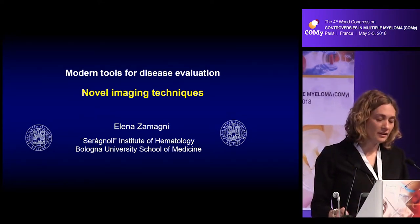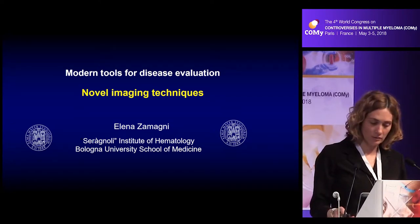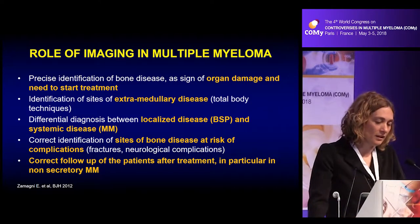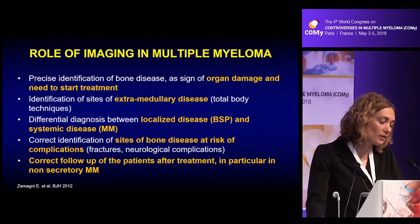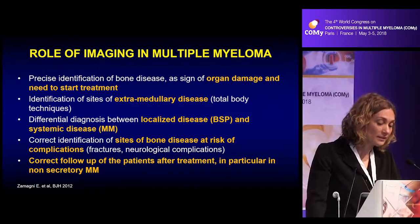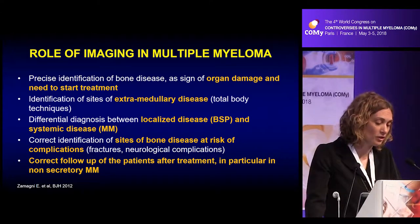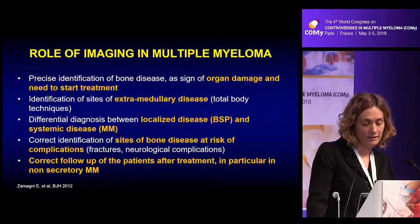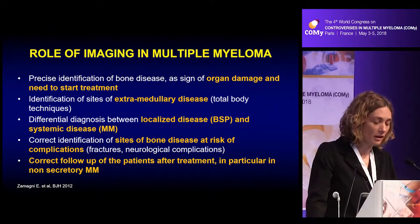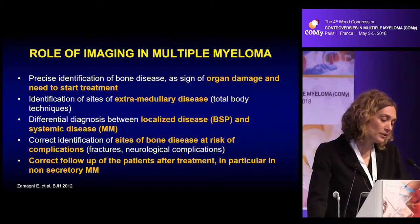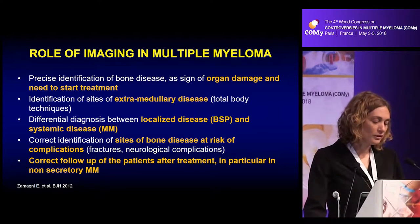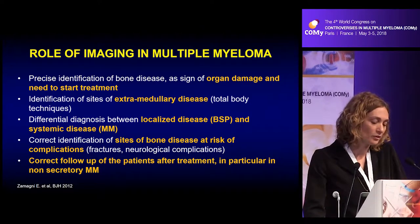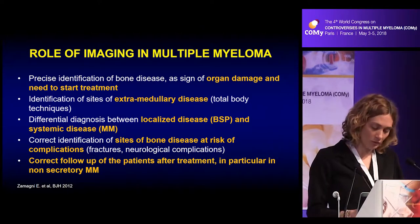The role of imaging techniques for disease evaluation is multiple. First, imaging is part of the demonstration of the CRAB criteria, including the presence of bone disease and symptomatic disease needing treatment. We also need imaging to identify sites of extra-medullary disease, to make a precise differential diagnosis between localized and systemic disease, to identify sites of bone disease at risk of complication, and to define the response to treatment, particularly in patients with non-secretory myeloma.